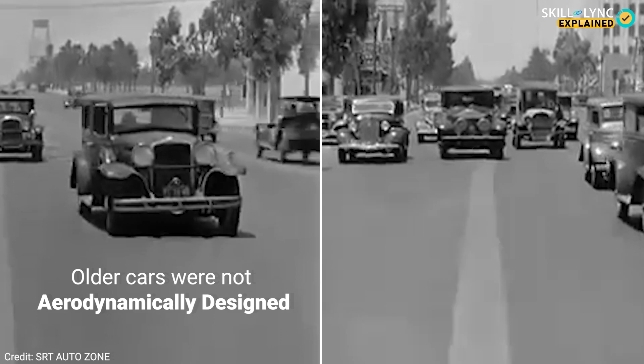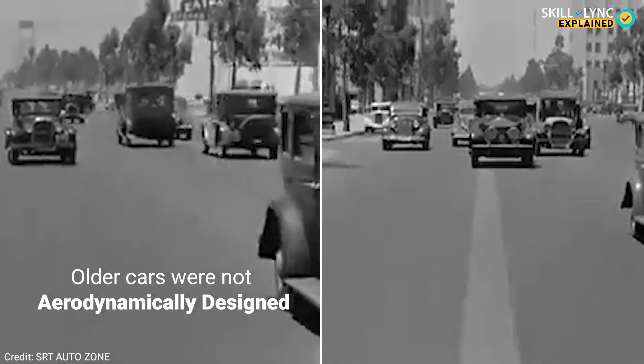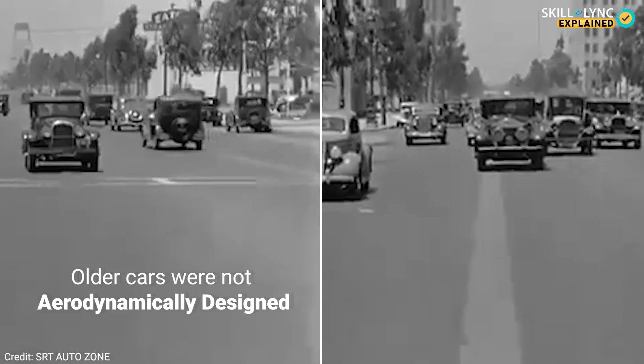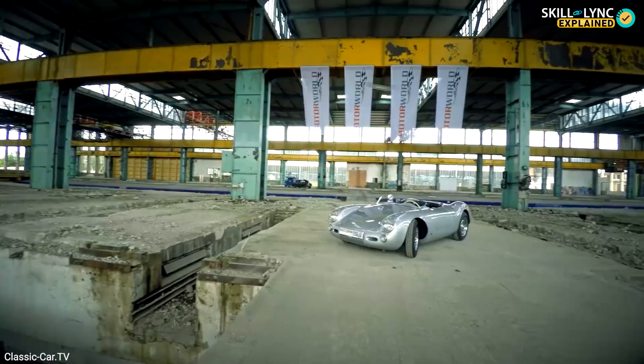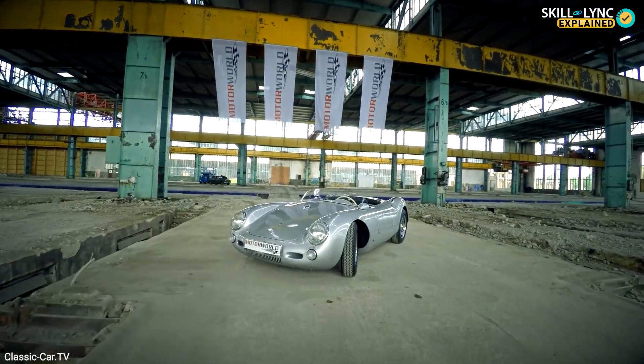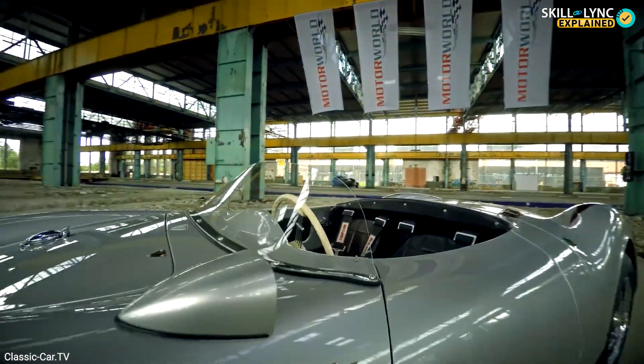In earlier days, when the cars were not powerful enough to attain high speeds, the design was not developed aerodynamically. That is why the older cars looked like this. But with advancement and as the speeds increased, the need for aerodynamic bodies increased as well.